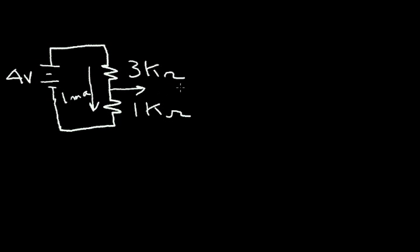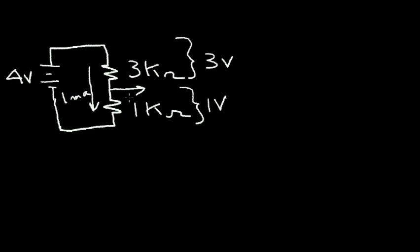The voltage across the 1kΩ resistor is one milliamp times 1kΩ, which is one volt. The voltage drop across the 3kΩ resistor is one milliamp times 3kΩ, which equals three volts. So if we have resistors in this divider circuit that are not equal, the voltage does not divide equally. The bigger resistor drops the bigger voltage, and the smaller resistor drops the smaller voltage.